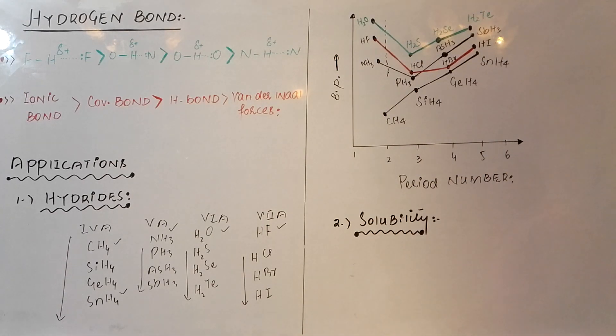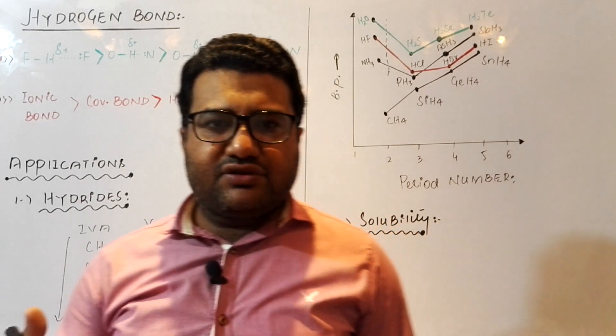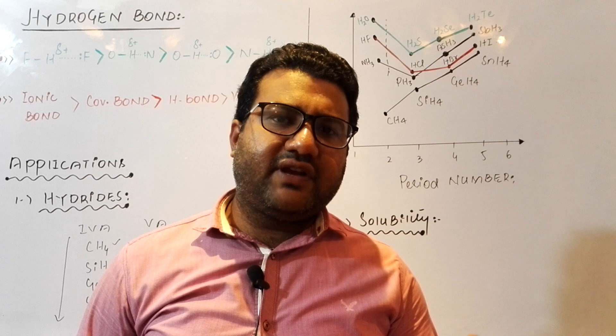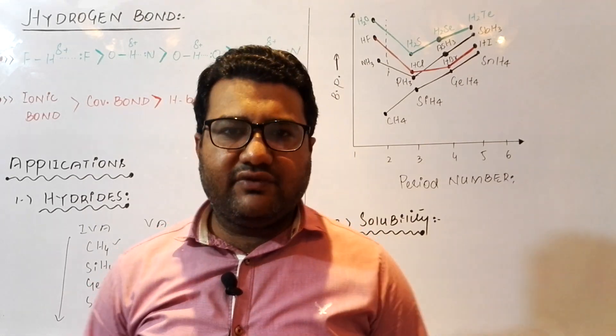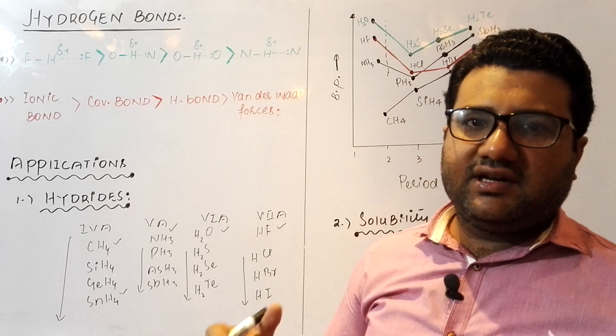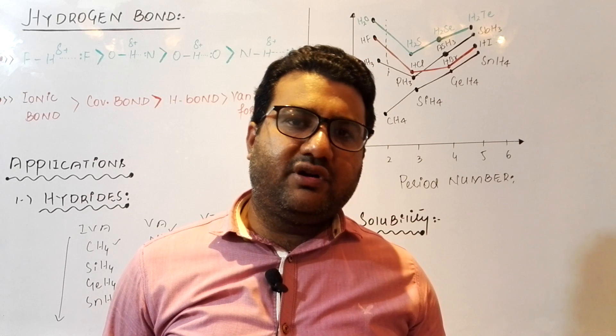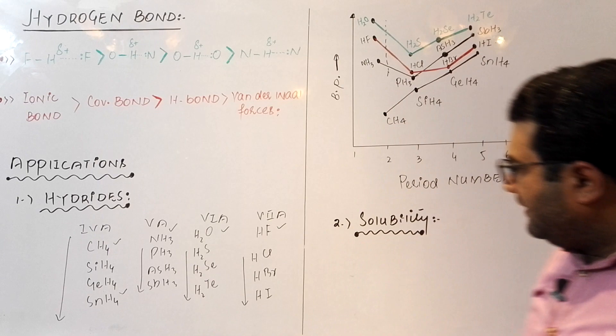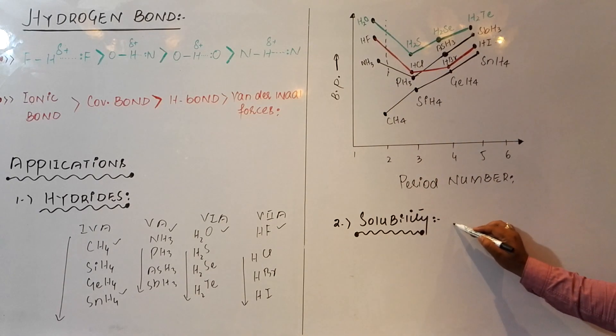The next is about solubility. In case of water, all those substances get dissolved easily in water that can form hydrogen bonding with it. Like in case of ethanol, it has OH group, it can form hydrogen bonding with water, so it will be miscible or soluble in water. Sugars, due to their OH group, are also soluble in water. Amines, due to their NH group, are also soluble in water. All those substances that can form hydrogen bonding with water, just like ethanol.